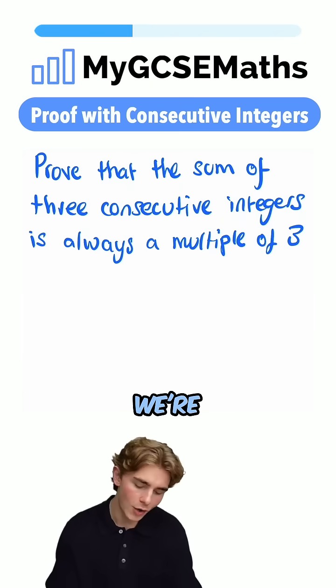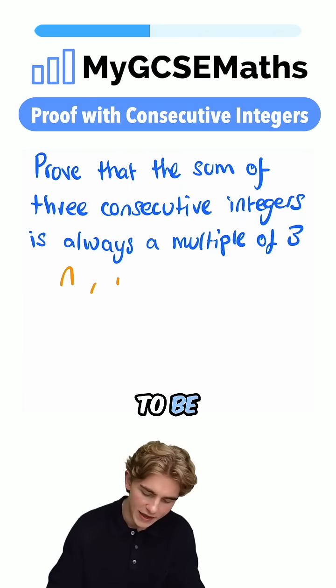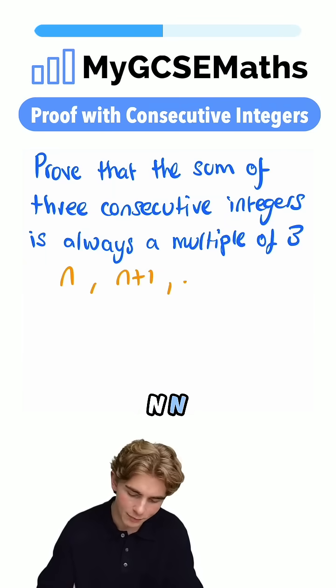To write these in general, what can we do? Well, we're going to call our first integer n, then the integer after that is going to be n plus one, and the integer after that is going to be n plus two.